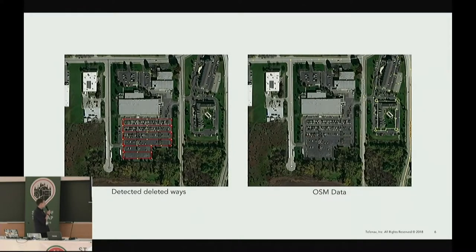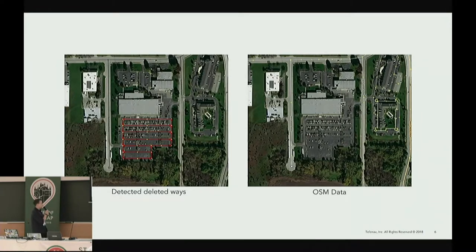Here we can see the output of the script. On the left, we can see some service ways that have been deleted, and on the right, we can see the OSM data. The left shows a previous version of the map and the right shows the current version. We compare them to find the differences. Even though these are service ways, they are pretty important for full road coverage in OSM.